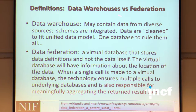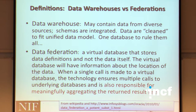A data warehouse contains data from diverse sources but requires a lot of work fitting pieces together—essentially one database to rule them all. In a data federation, it's a virtual database with data definitions, indexes, and common access protocols, but all are independent databases made to look like they work together. The entity bringing it together is responsible for calling appropriate databases and meaningfully aggregating the returned result set. How to relatively rank databases and data content turns out to be one of the biggest challenges in computer science.